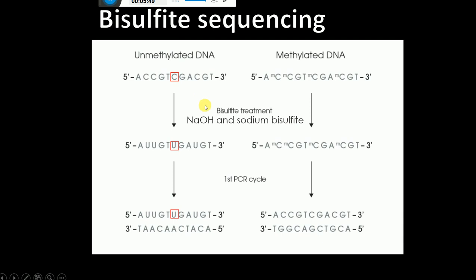If the DNA is unmethylated, after bisulfite treatment the cytosine will be converted into uracil — this is a very important concept. So for unmethylated DNA, unmethylated cytosine is converted to uracil. However, if the cytosine is methylated, the bisulfite treatment does not convert it; methylated cytosine remains the same and is not converted to uracil.